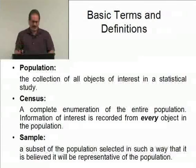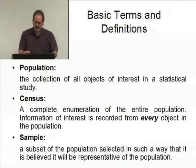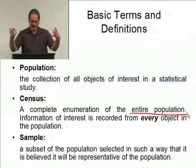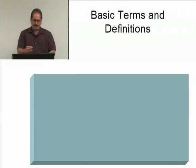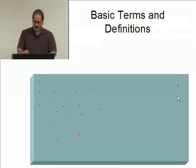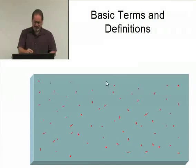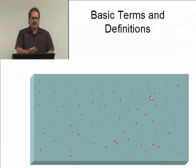A census is a complete enumeration of the entire population — going out to every single element and getting data from each one. As a graphical representation, suppose this box represents my population — think of it as your entire universe for a particular study. Each dot I'm placing inside represents one element. A dot could be a person, a bag of potato chips coming off an assembly line, a can of soda — whatever you're studying.